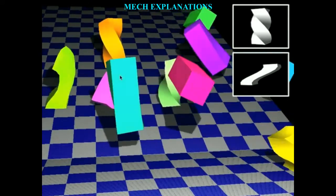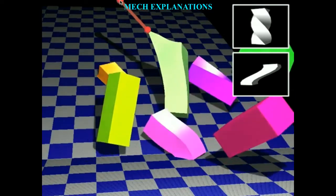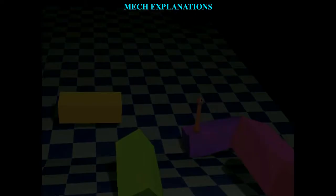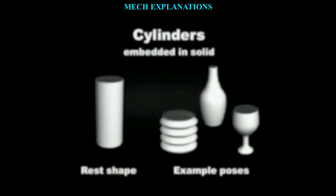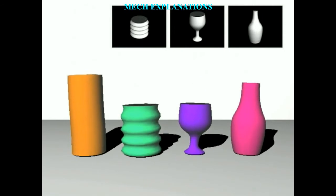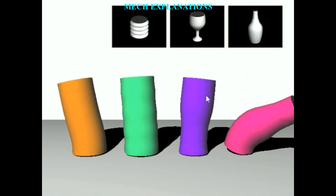Young's modulus is named after the 19th-century British scientist Thomas Young. However, the concept was developed in 1727 by Leonhard Euler, and the first experiments that used the concept of Young's modulus in its current form were performed by the Italian scientist Giordano Ricchetti in 1782, predating Young's work by 25 years.